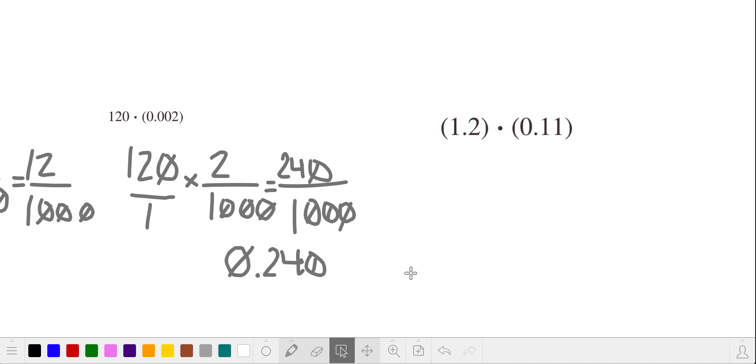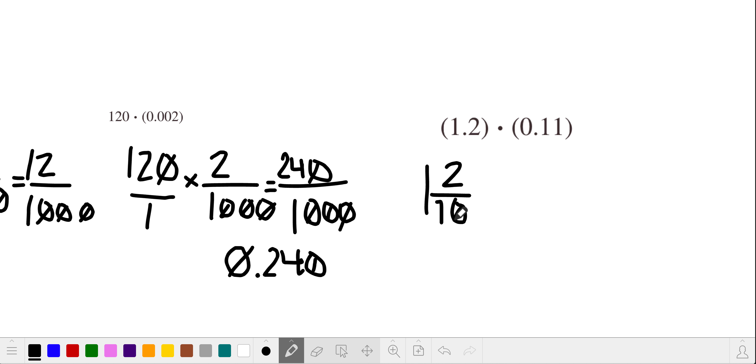I'll give you a hint. This right here, we would read this as 1 and 2 tenths. And this is read as 11 hundredths. So this is what your setup will look like. Now, this is where a lot of you might get stuck. I will give you a hint. We like fractions. This right here is a mixed number. Can you think of a way to rename this guy into a fraction? So if you can rename him into a fraction, then we get fractions, and fractions are our friends.